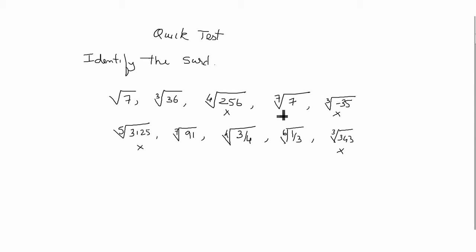Fourth root of 256, if you solve it by factorizing, you get 4. Cube root of minus 35 has a negative radicand. Fifth root of 3125 has value 5, and cube root of 343 has value 7.